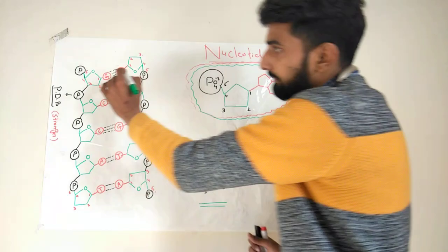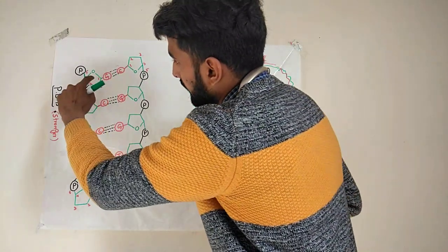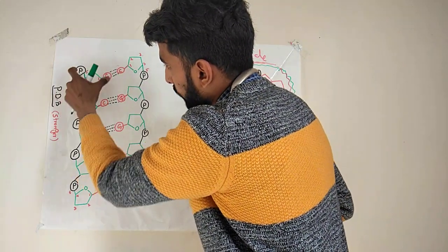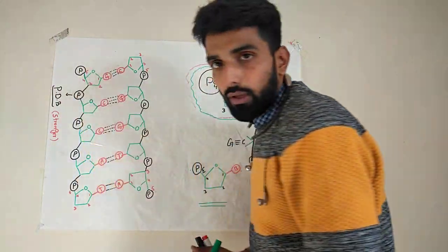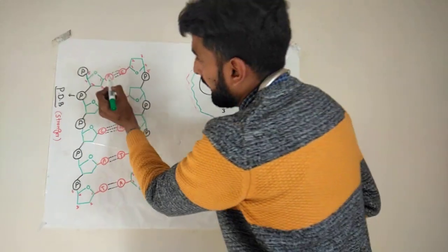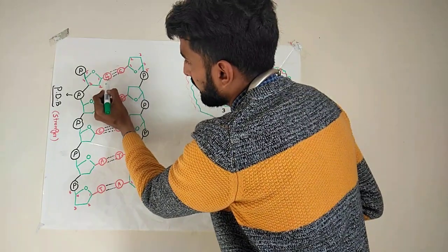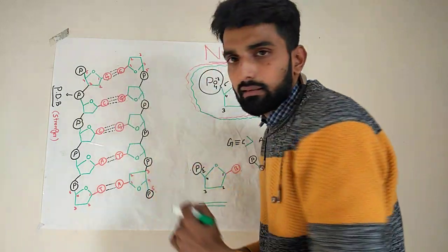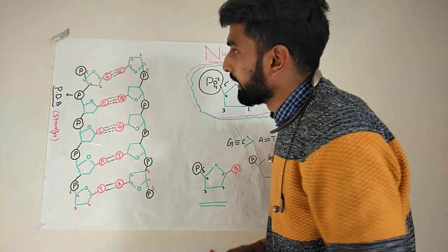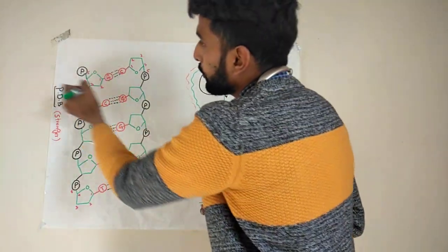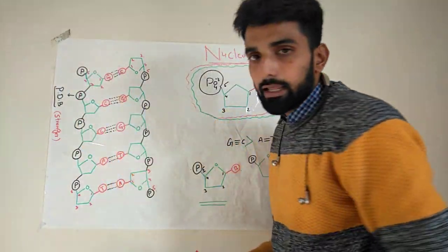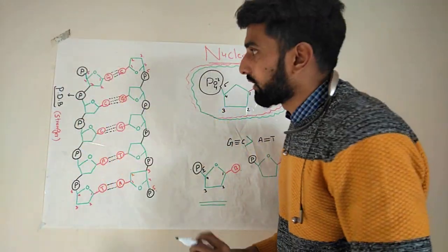Here you can see one nucleotide — the base is guanine in our example. So this nucleotide is basically guanosine monophosphate.